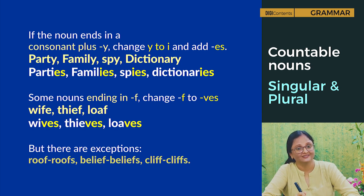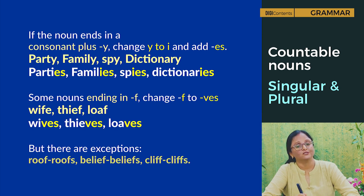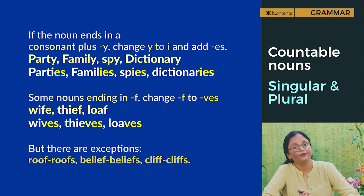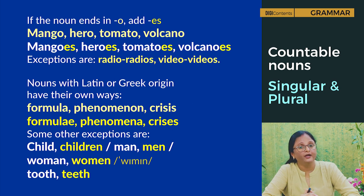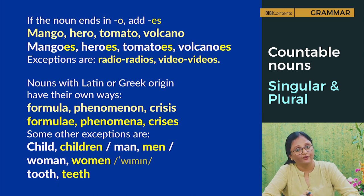Some nouns ending in f change f to -ves: wife/wives, thief/thieves, loaf/loaves. But there are exceptions: roof/roofs, belief/beliefs, cliff/cliffs. If the noun ends in o, add -es: mango/mangoes, hero/heroes, tomato/tomatoes, volcano/volcanoes. Exceptions here are: radio/radios and video/videos — no e added.